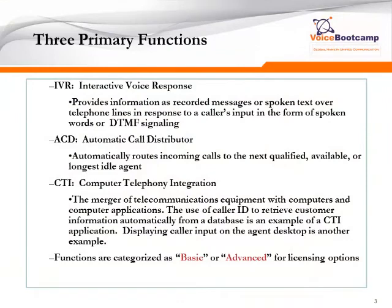Like any call center, there are three major functions of UCCX: IVR, ACD, and CTI. IVR is an Interactive Voice Response — it provides information such as recorded messages or spoken text over a telephony line in response to a caller's input in the form of spoken words or DTMF signals.